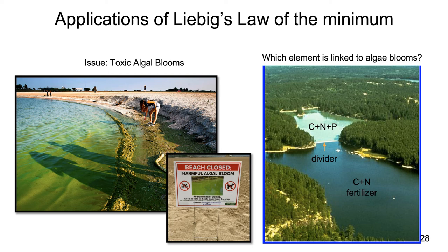There's a great experiment where a lake was split in half with a divider. In one half they added carbon and nitrogen fertilizers, and the water remained a normal color — adding carbon and nitrogen alone did not cause an algal bloom. But when phosphorus was added to the other half, there was a big algal bloom. This experimental evidence showed that adding both nitrogen and phosphorus fertilizers pushed algae over the limiting factor — phosphorus was a major limiting factor for algal growth, and adding it allowed these harmful algal blooms to happen.